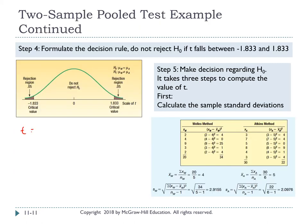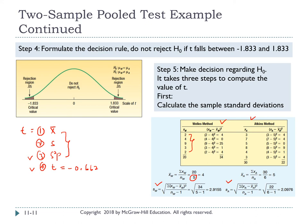To compute t-statistics, follow these steps: first, compute the sample mean for both methods by summing observations and dividing by n; second, compute the sample standard deviation for both methods; third, compute the pooled variance; fourth, plug everything into the t formula. The resulting t value equals −0.662.